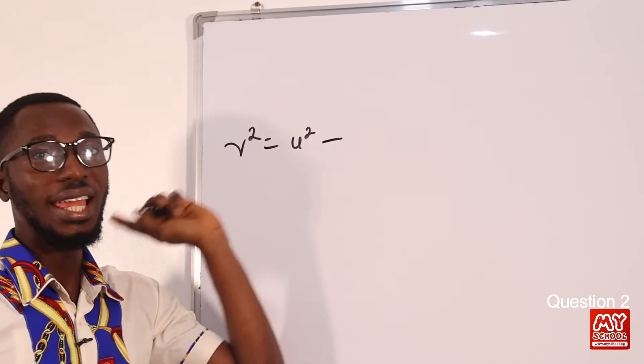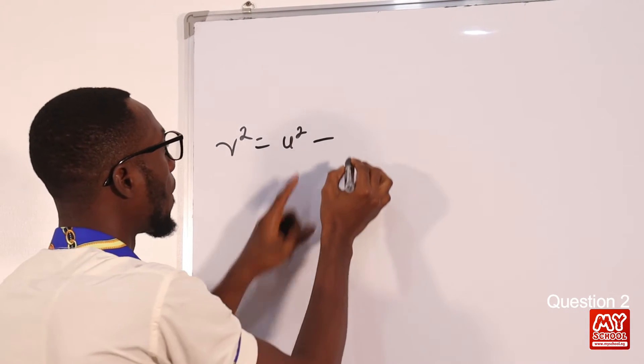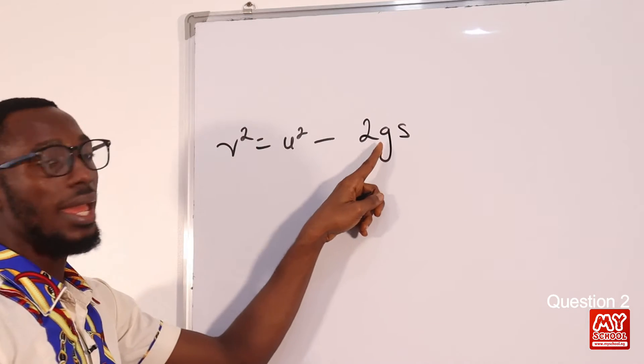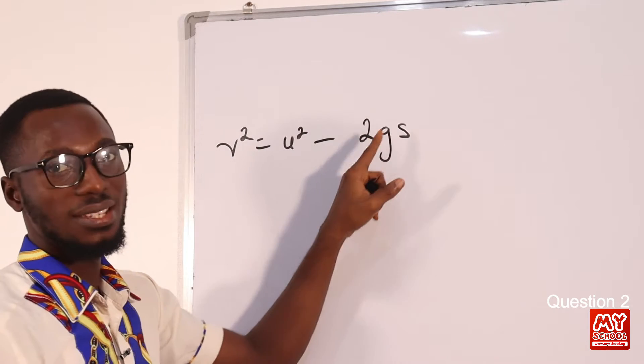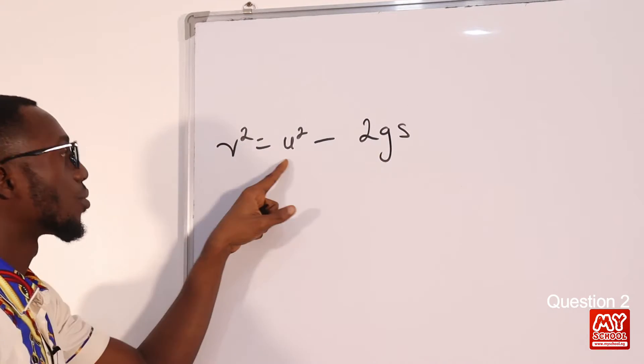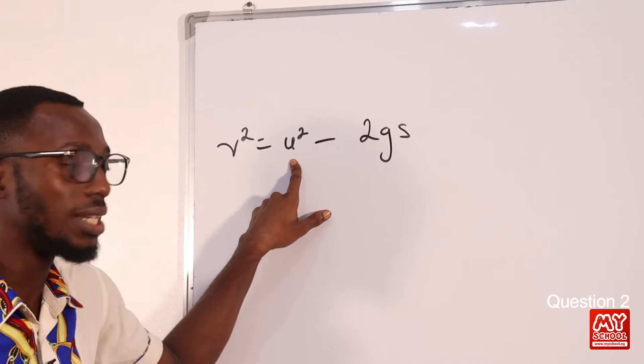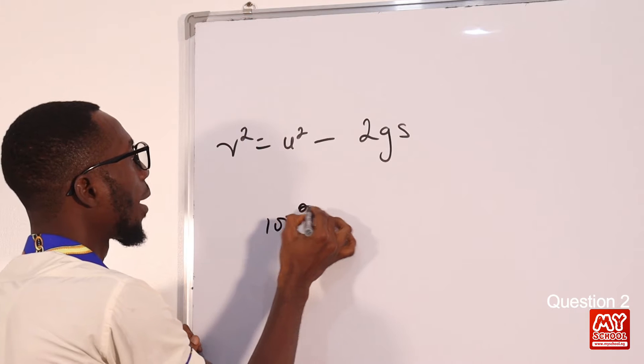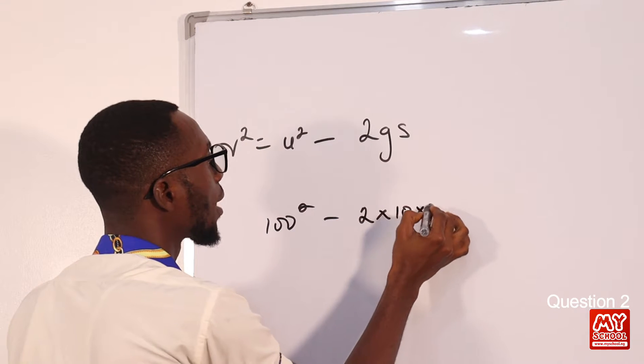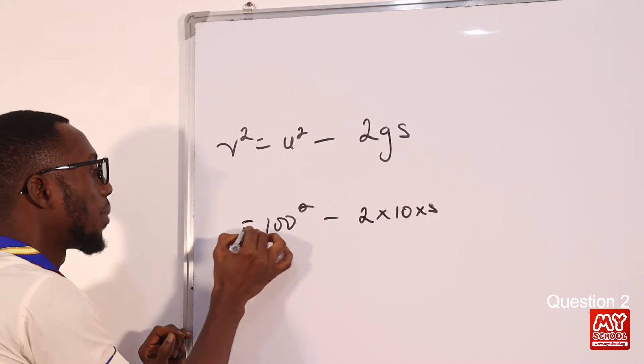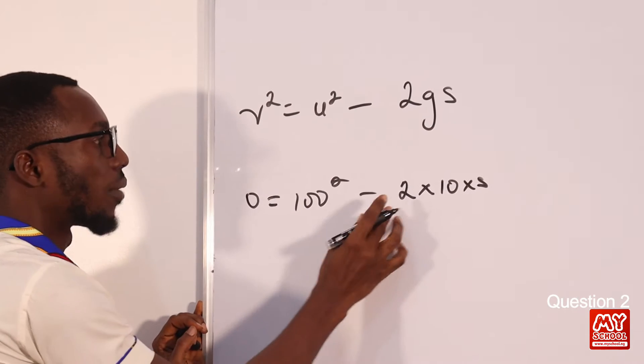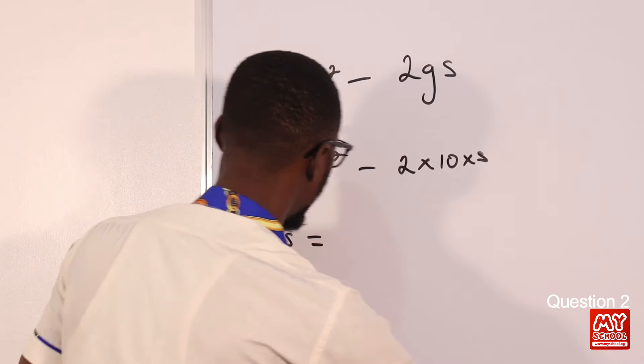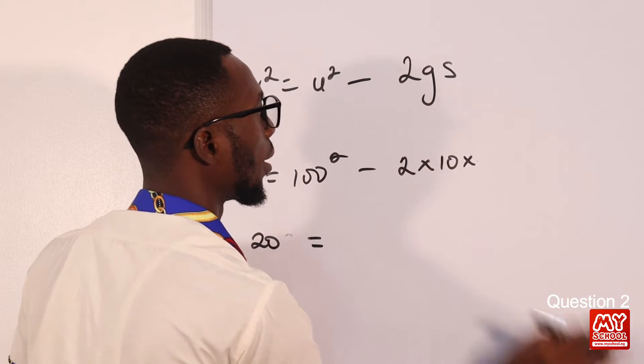It's going upward against acceleration due to gravity, so it's going to be minus instead of plus. Not 2AS, minus 2GS. Acceleration due to gravity once again. So the initial velocity is 100. So 100 squared, this is 0. So we have 100 squared minus 2 times 10 times S. So that means when this comes, the H becomes 2 times 10, we have 20S. Because the S is going to change to H, the height.